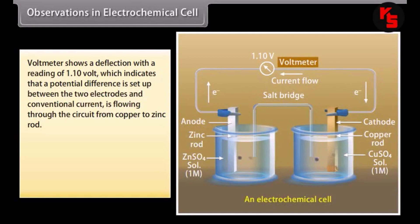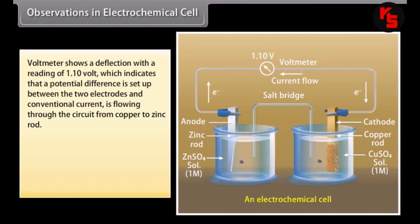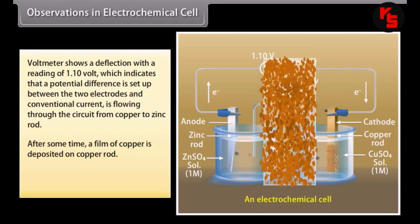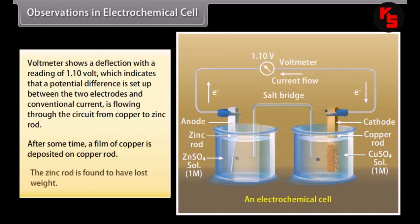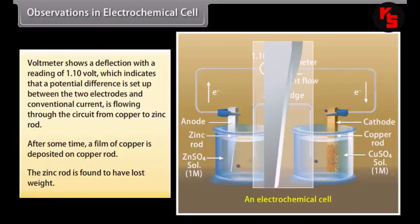Observations in electrochemical cell. The voltmeter shows a deflection with a reading of 1.10 volts, which indicates that a potential difference is set up between the two electrodes and conventional current is flowing through the circuit from copper to zinc rod. After some time, a film of copper is deposited on the copper rod, and the zinc rod is found to have lost weight.